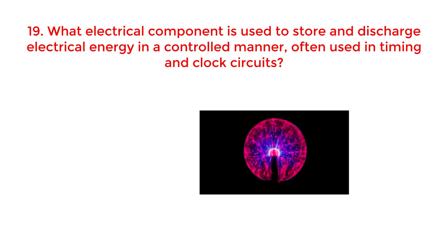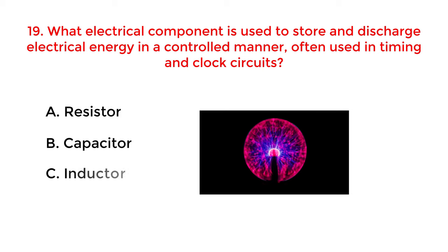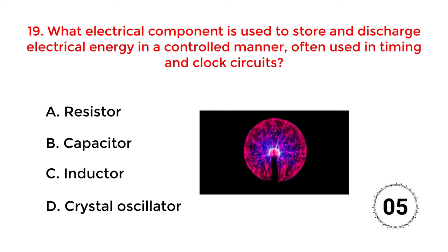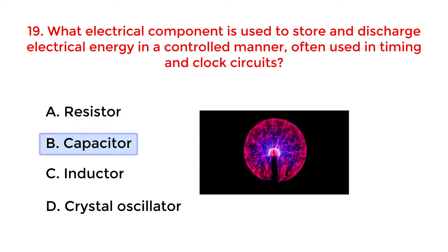Which electrical component is used to store and discharge electrical energy in a controlled manner, often used in timing and clock circuits? The correct answer is option D: Capacitor.